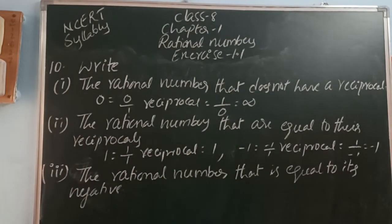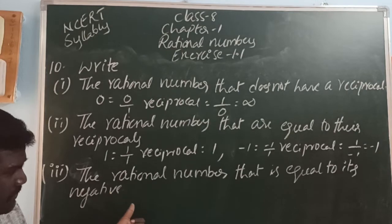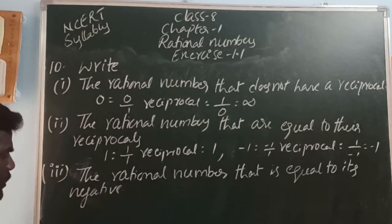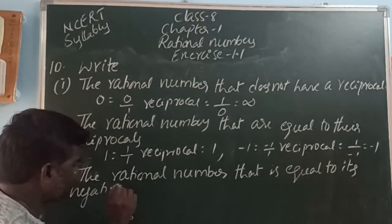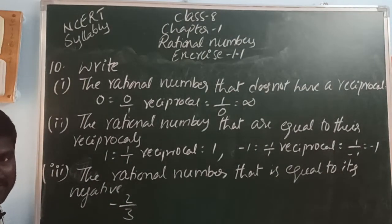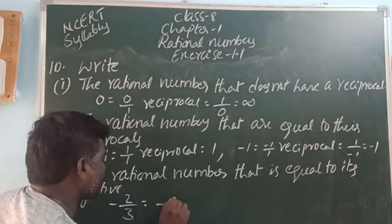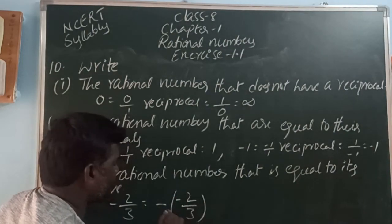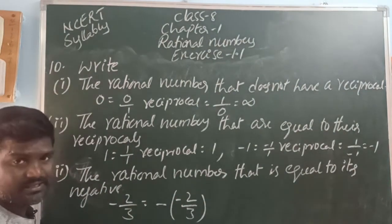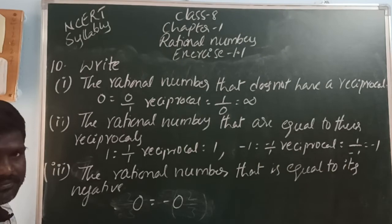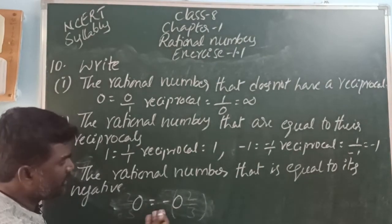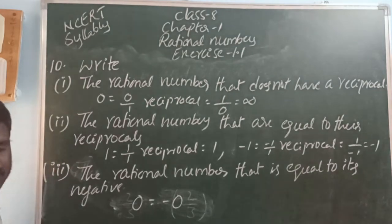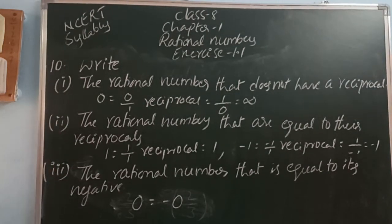The rational number that is equal to its own negative. For a number like minus 2 by 3, its negative is minus of minus 2 by 3, which equals plus 2 by 3 — those are not equal. But 0 negative is minus 0, which equals 0. So 0 is equal to its own negative.